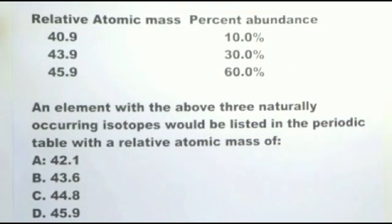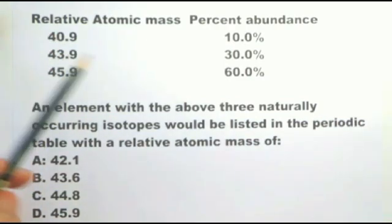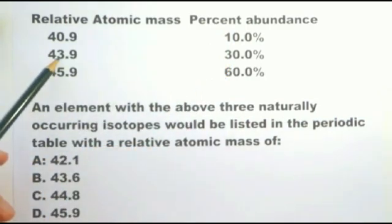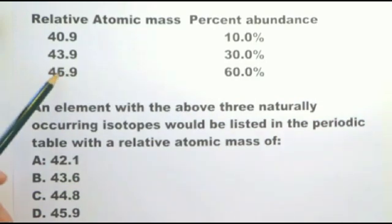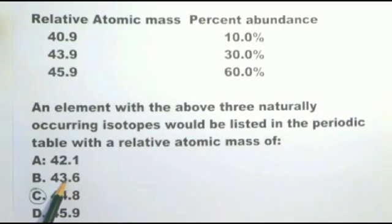Another question. More mathematics than chemistry. You can see by looking at these relative atomic masses and the percent abundance that the answer is not going to be below 43.9. It's clearly going to be somewhere between 43.9 and 45.9. And therefore, there are only two possibilities, C and D. It can't be D, because that would be 100% of this isotope. So if you had 100% of this isotope, it would be 45.9. You've only got 60% of it, so it brings it down to 44.8, because it's got to be greater than 43.6.